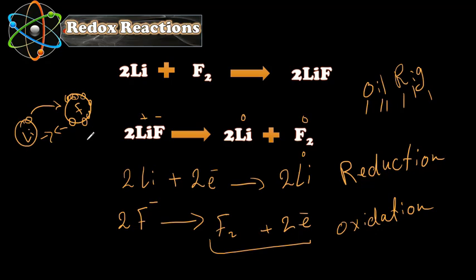Once lithium and fluorine have bonded and achieved a full octet, why would they break apart? We need something to give back the electron that was lost — to push the electrons back to where they came from. The force that can do this is electricity. The process of using electricity to break down ionic compounds is called electrolysis, which we will look at in the coming video.